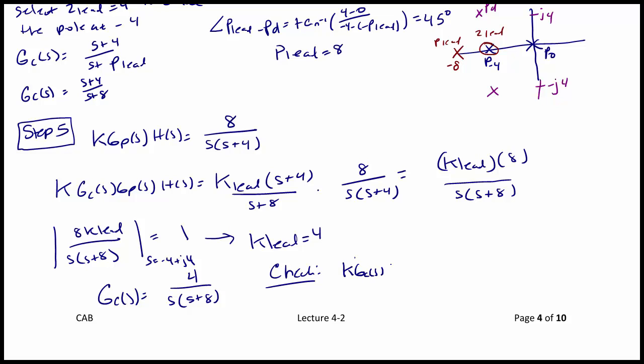H of S is equal to 32 over S squared plus 8S. And the characteristic equation for the feedback control system would be S squared plus 8S plus 32, which does indeed have poles at negative 4 plus or minus J4. So our design does work.